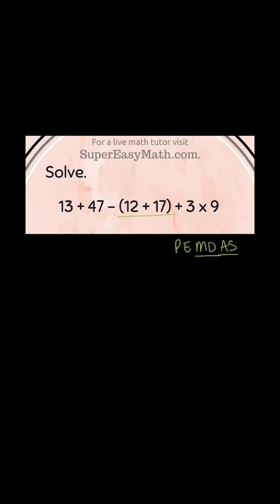Everything else in the problem literally just gets rewritten. The only part of the problem that I'm going to solve is this part. So 13 plus 47 minus what's 12 plus 17 is 29. So write 29 instead of that part plus 3 times 9.